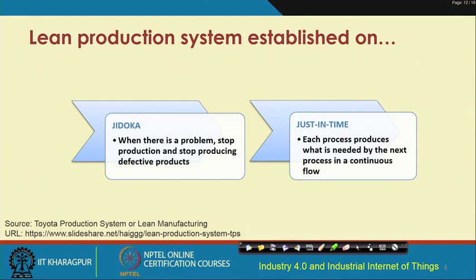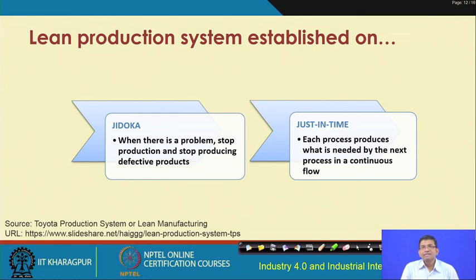The lean production system has two key foundational concepts. First is Jidoka, which states that whenever there is a problem — with machines, in the process, or otherwise — stop production then and there to avoid producing defective products. Second is Just-in-Time (JIT), which ensures that each process produces exactly what is needed by the next process in a continuous flow.